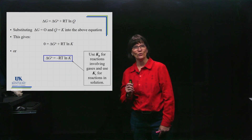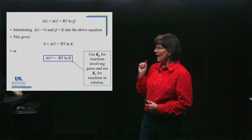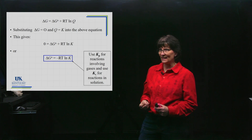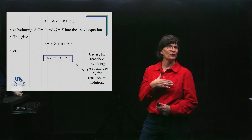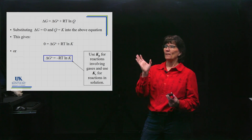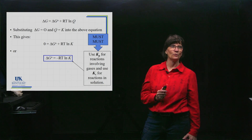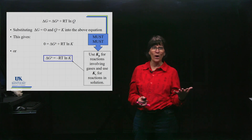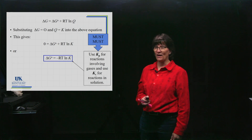Before discussing its use, you need to understand this: you're not going to get the right delta G out unless you use Kp if it's gases and Kc if it is aqueous. You have to use the right K. For some reactions Kp and Kc are equal, so it wouldn't matter — but that's a rarity. This is a must-remember thing. It'll slip out of memory and you'll get the wrong answer without knowing why, likely because you used the wrong value of K.